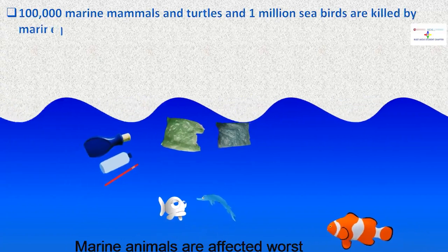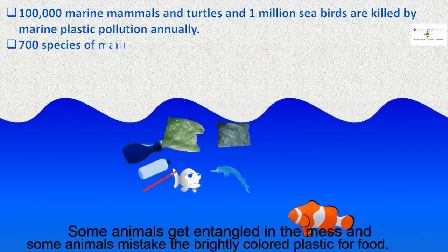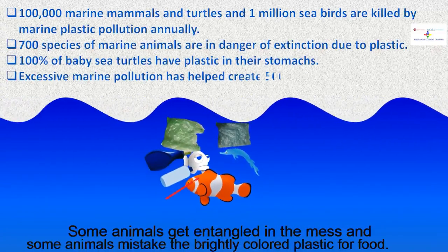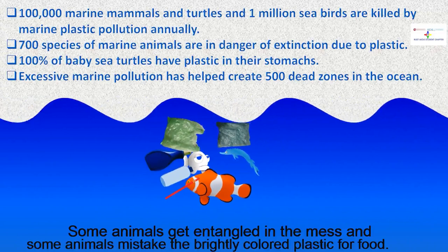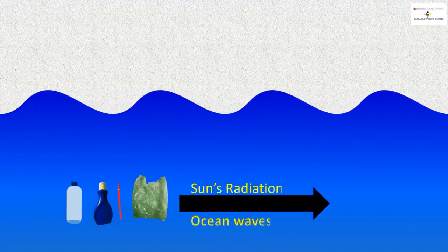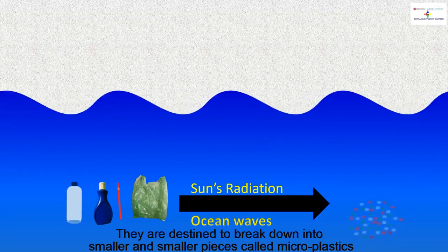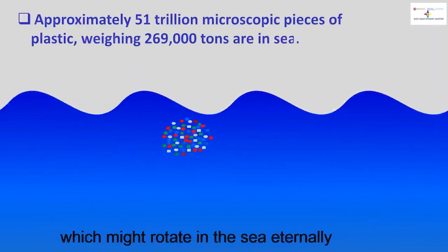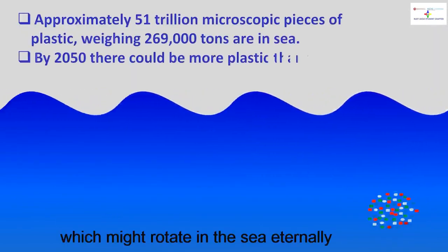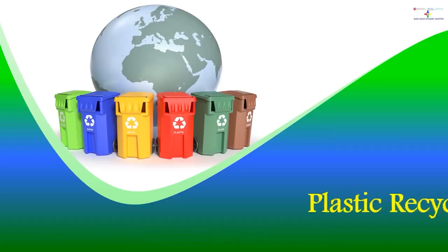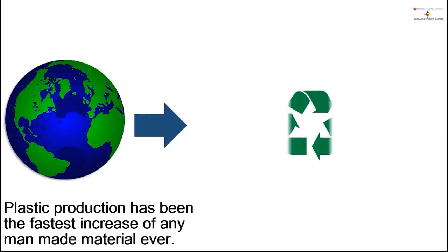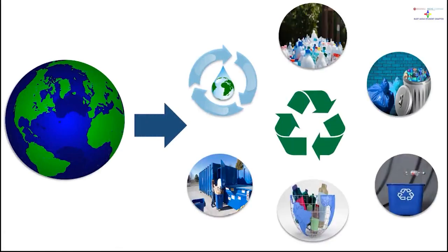Many animals are affected — some get entangled in the mess, and some mistake the brightly colored plastic for food. Most plastics don't biodegrade; they are designed to break down into smaller and smaller pieces called microplastics, which may persist in the sea eternally. Plastic production has seen the fastest increase of any man-made material ever.